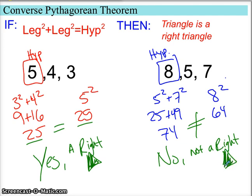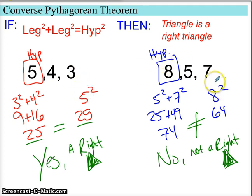That's how it looks when you're working without a picture. Just make sure you find your longest side and put it in the hypotenuse position. That's what the converse of the Pythagorean Theorem does — it's a way to determine if a triangle is a right triangle without even seeing it, as long as you have the three side lengths.